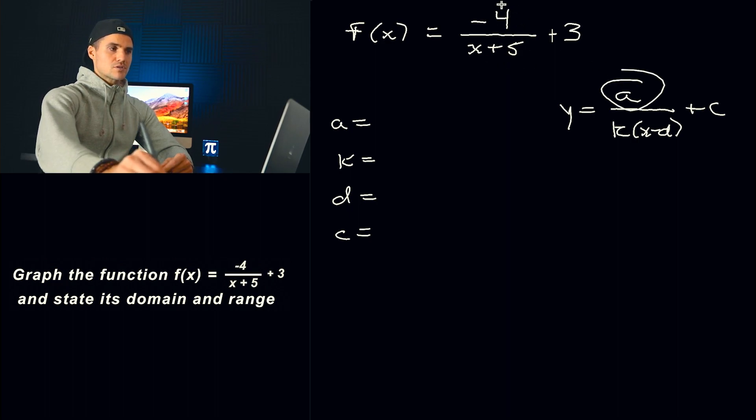So the a value, it's obviously going to be this negative 4. Now the k value, notice there's like an imaginary 1 on the outside of this x plus 5, like that.